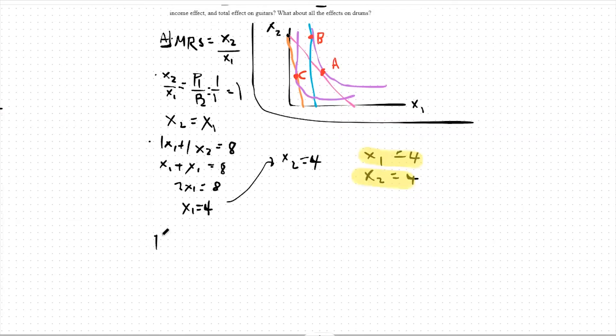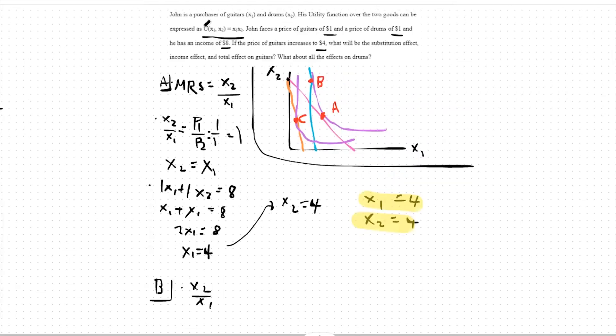Moving to point B, let's take our MRS equaling to our price ratio again. X2 over X1 will still be our marginal rate of substitution, seeing as our utility function did not change. However, our prices did change. They're now 4 over 1. This means that we're looking at the point with the new prices. But notice something else. We're facing the same indifference curve as before. This means we'll be at our old utility.